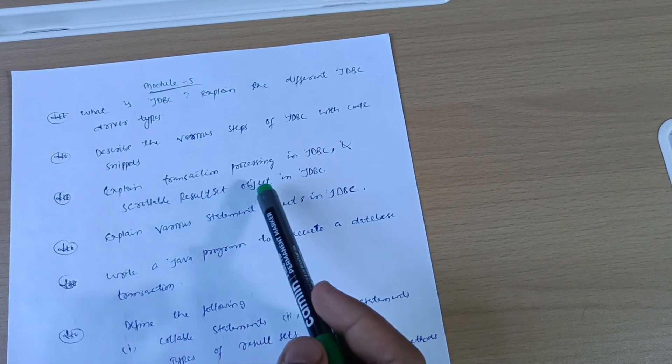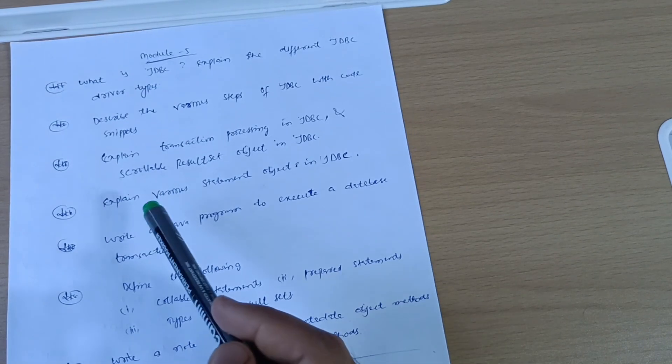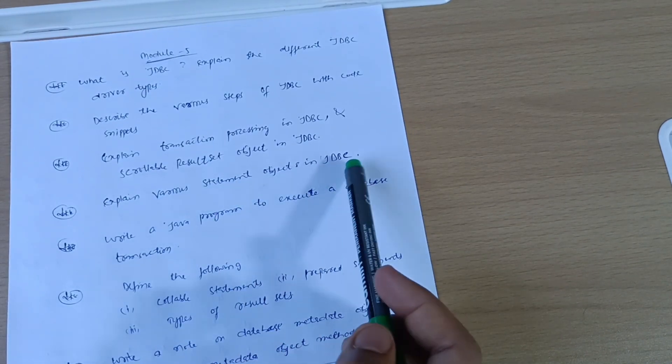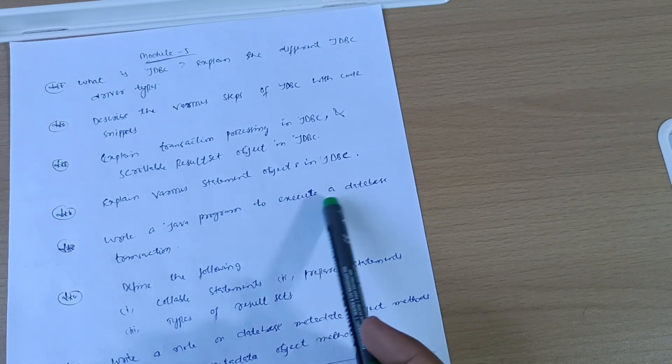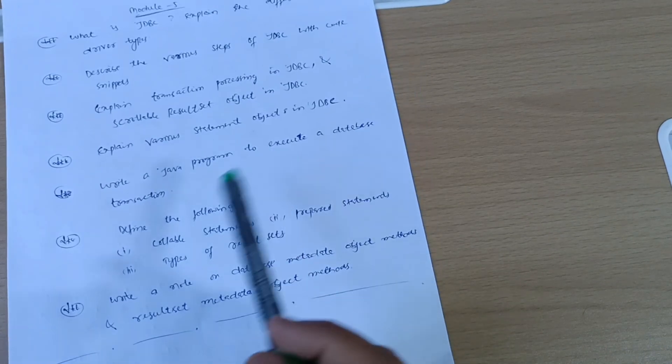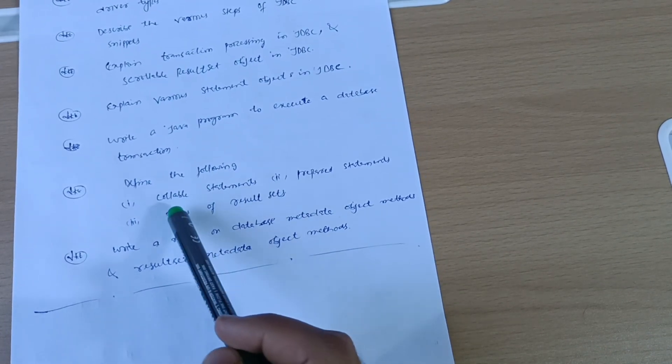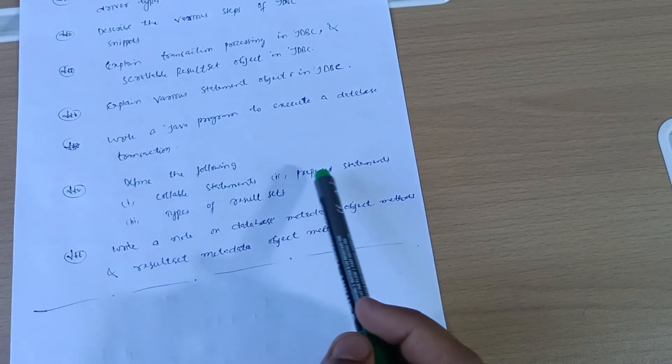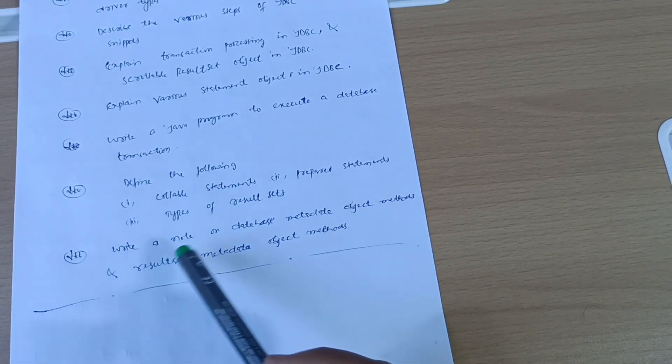Explain various statement objects in JDBC. Write a Java program to execute a database transaction. Define the following or explain the following: callable statements, prepared statements, and types of result sets.